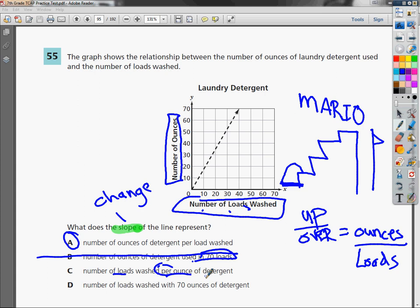And the last one, number of loads washed with 70 ounces. Once again, we can't be fenced in. So our answer to number 55, based on what we learned from Mario and what we know about change, is A.